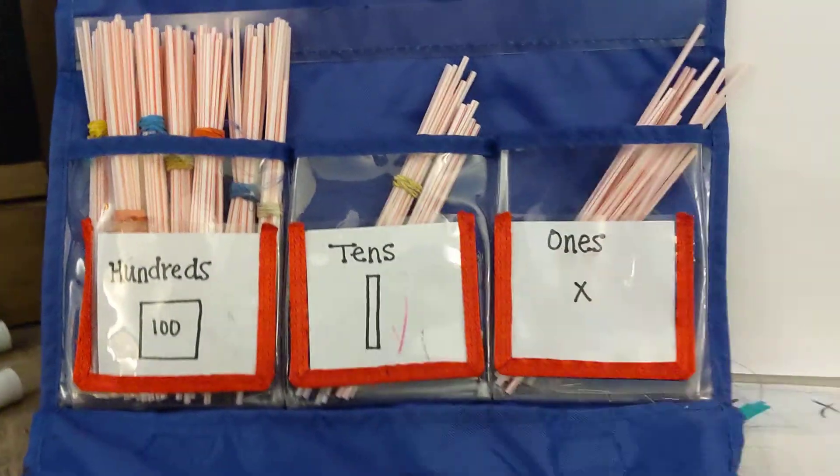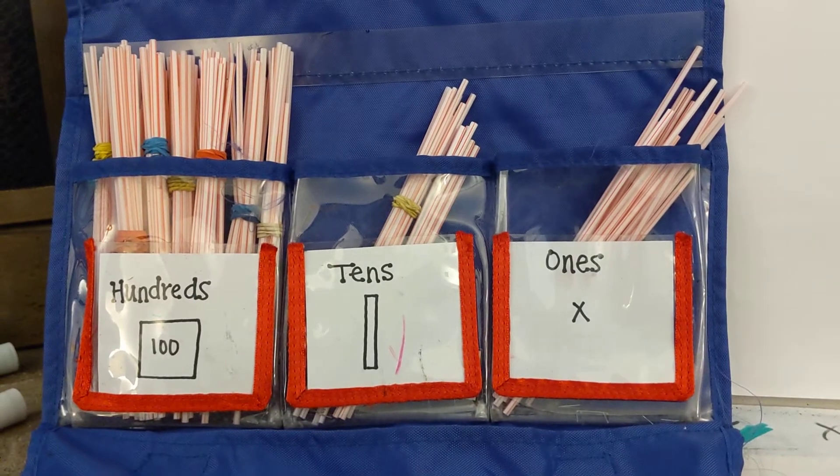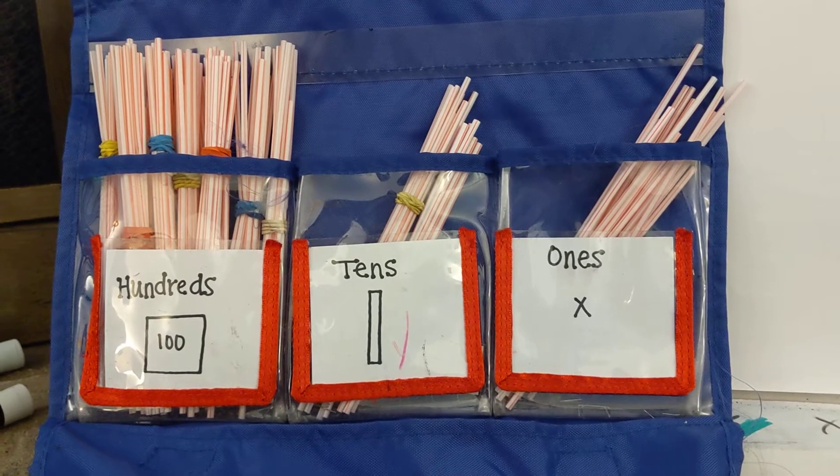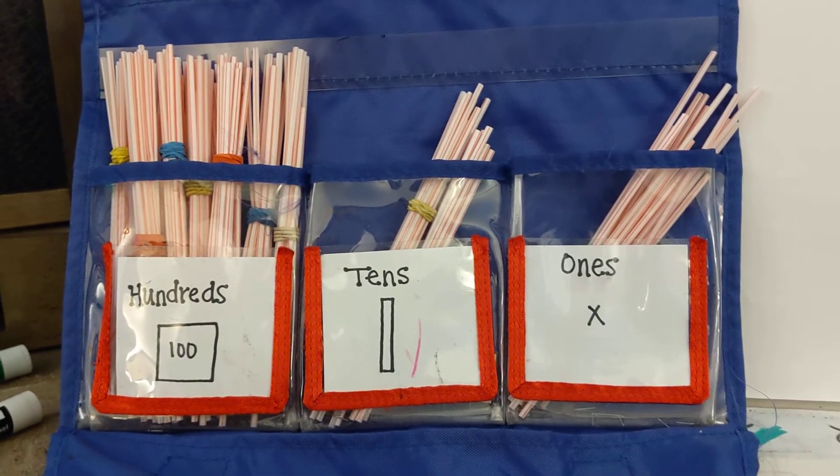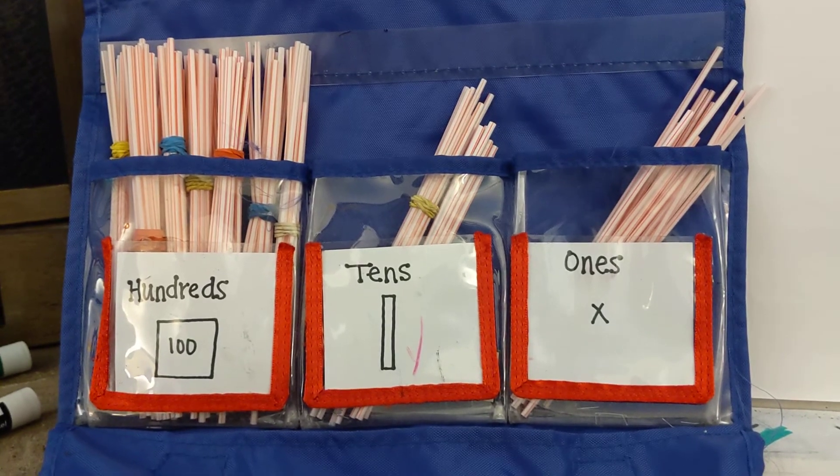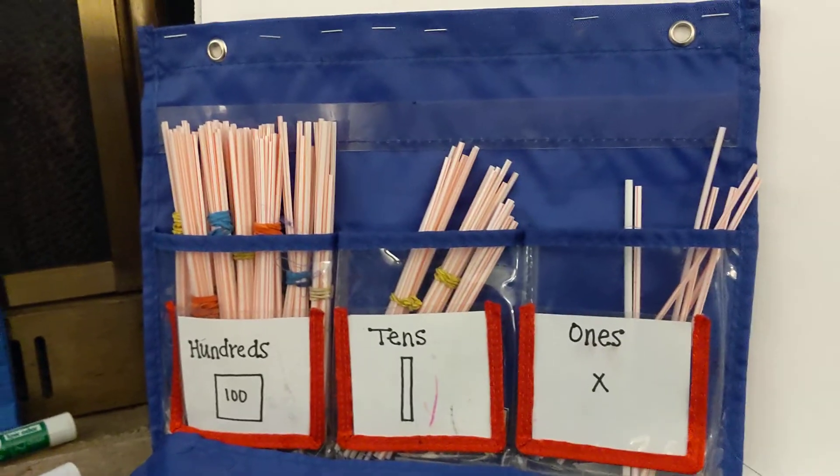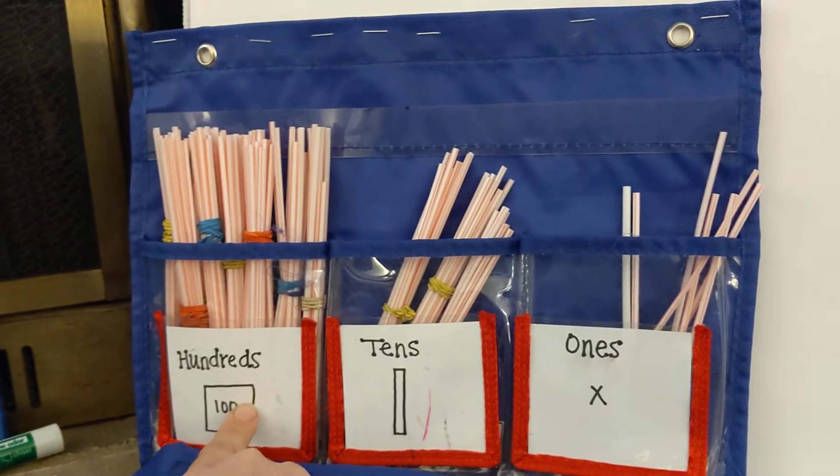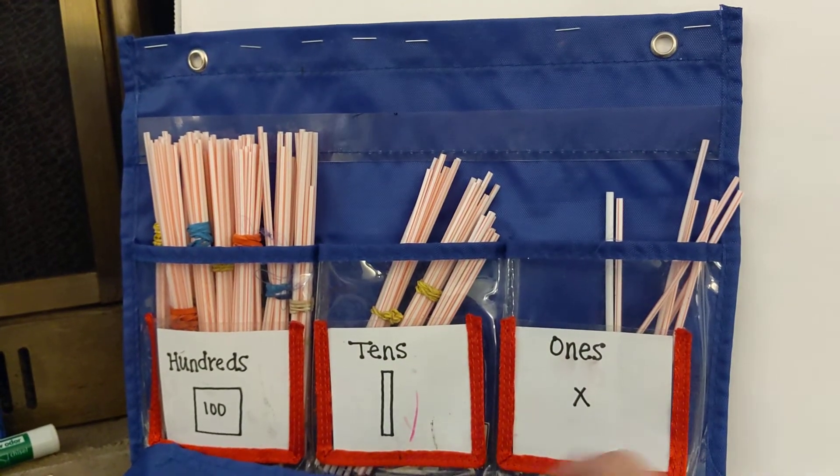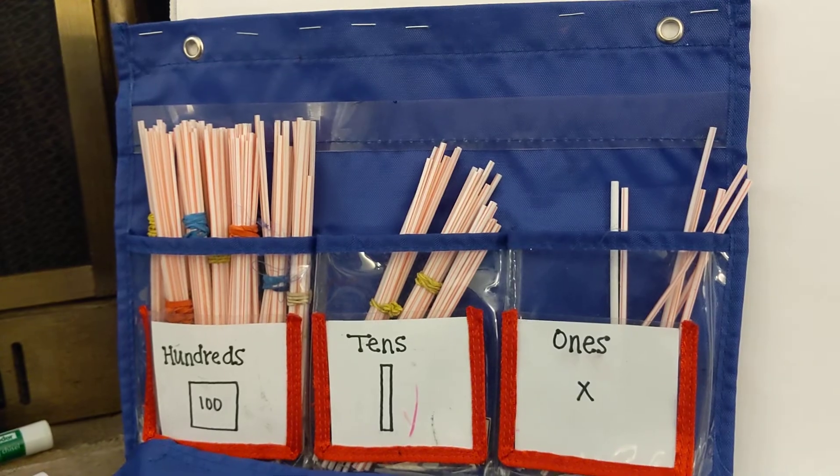Now hopefully some of you are freaking out at home, because I should not have that many straws in the ones place. When do we bundle? Exactly. Very good. When we have a bundle or a group of ten. So I'm going to go ahead and do that. So now you should have one group of one hundred, three groups of ten, and seven ones for one hundred thirty-seven.